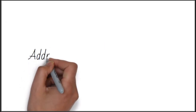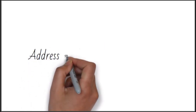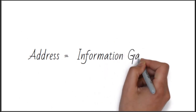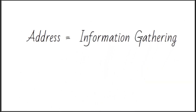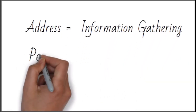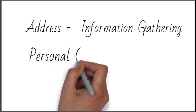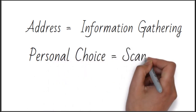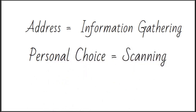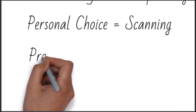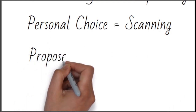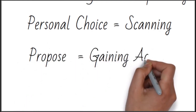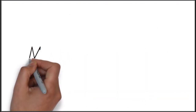There is an address in the first step, so that address can be termed as information gathering. Afterwards, Jack identified the personal choices and likings of Rose — and that can be termed as scanning in cybersecurity. The proposal can be termed as gaining access in cybersecurity.